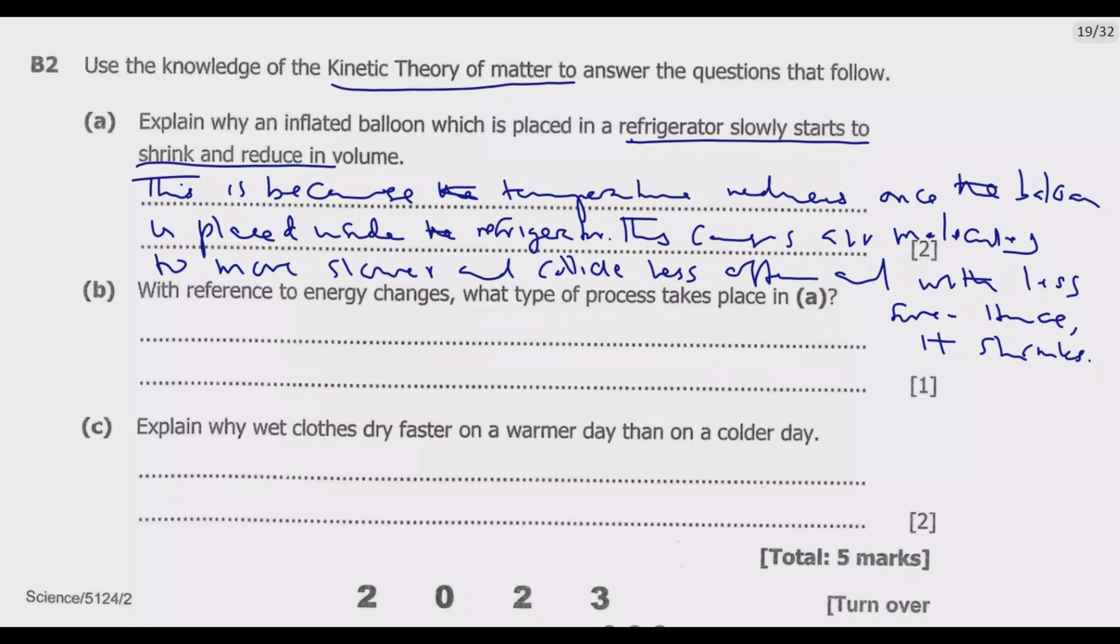Question B: With reference to energy changes, what type of process takes place in (a)? So we just need to identify the type of process that takes place in (a). So in (a) we are putting the balloon inside the refrigerator. Then it is shrinking with time. So we need to identify the process.